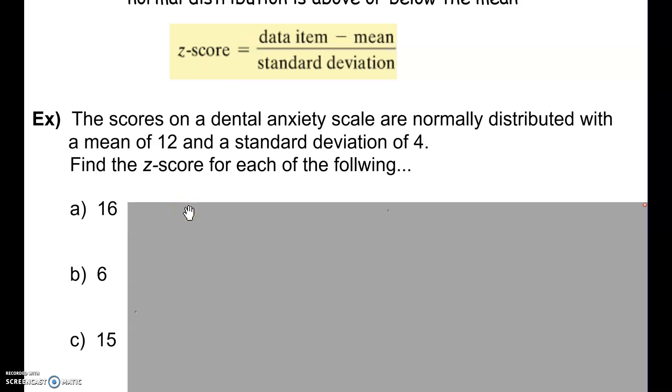We're going to find the Z-score by taking 16, the data item, minus the mean of 12, and dividing that answer, which is 4, by the standard deviation, which is also 4. So 4 divided by 4 is 1. A score of 16 has only one standard deviation above the mean, so that's pretty normal. Within 68% of the data is within one standard deviation of the mean, so that's a pretty typical score.